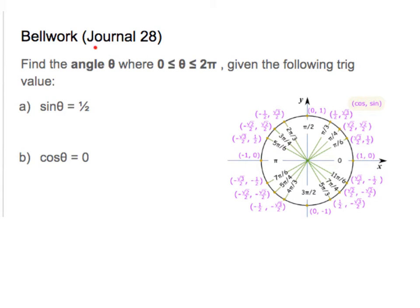We're on journal 28 here, and we are going to be finding the angle for sine and cosine given the value. These values come from the unit circle. Theta is between 0 and 2 pi, so we do have a limitation here — it's between these two intervals, given the trig value.